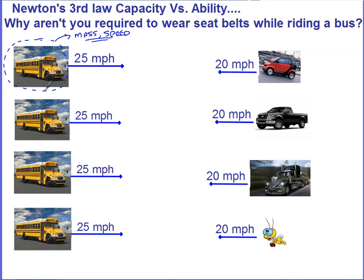But since the bus is the same in every one of these situations, we need to consider that it's also going to be interacting with something else. These objects also have mass and speed. What's different here is that even though they all have the same speed, they all have different masses.